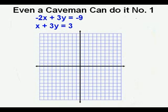Here we have the first system of equations Og will solve today. We have -2x + 3y = -9 and x + 3y = 3.